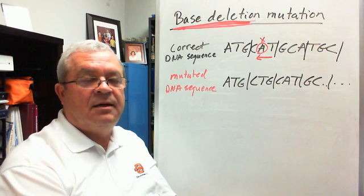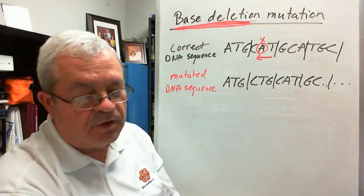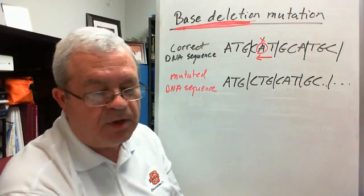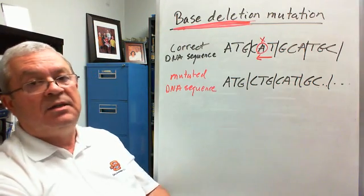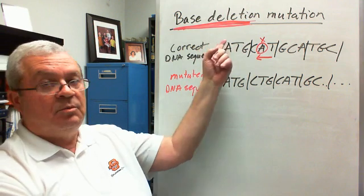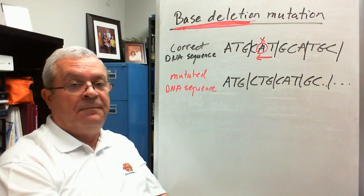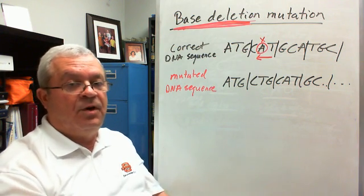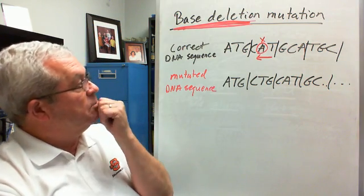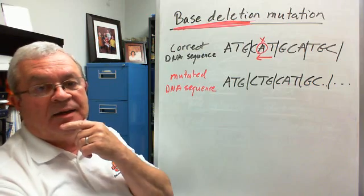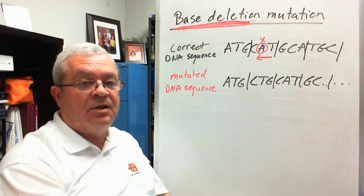Thinking back to the other kind of mutation we talked about — base substitution — there's a question: which type of mutation would have the greatest effect on the resulting protein, and why? Is it base substitution, or is it this one, base deletion? Which one is going to have the greatest effect on the resulting protein?